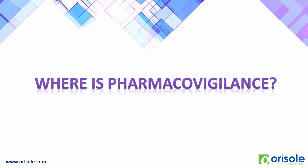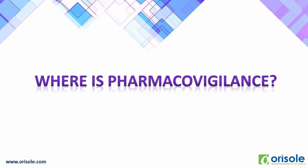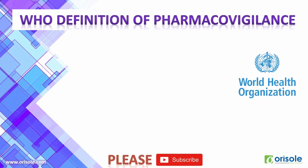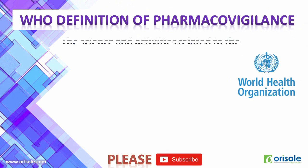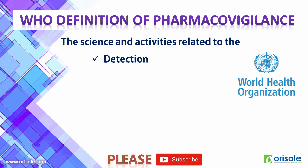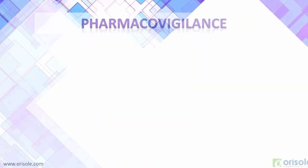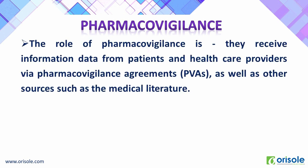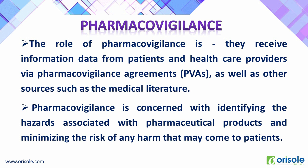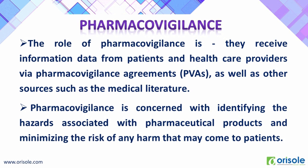You may get a doubt about where pharmacovigilance fits in the entire process. Wherever adverse drug reactions or adverse events occur, pharmacovigilance plays a wider role. According to the World Health Organization, pharmacovigilance is the science and activities related to the detection, assessment, understanding, and prevention of adverse effects or any other drug-related problems. Pharmacovigilance receives information and data from patients and healthcare providers via pharmacovigilance instruments as well as other sources such as medical literature, and is mainly concerned with identifying hazards associated with pharmaceutical products and minimizing the risk of any harm that may come to patients.